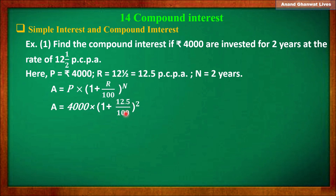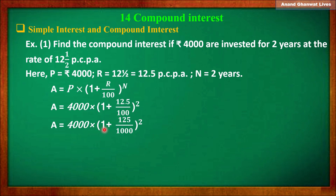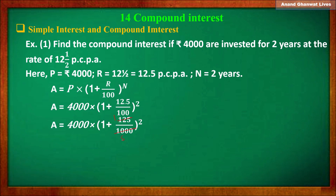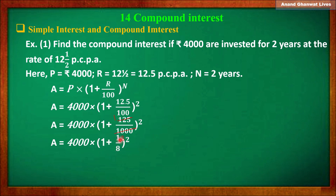To simplify, we multiply the numerator and denominator by 10, so the equation becomes A = 4000 × (1 + 125/1000)², which simplifies to A = 4000 × (1 + 1/8)². Now 1 plus 1/8 equals 9/8, so the equation becomes A = 4000 × (9/8)².